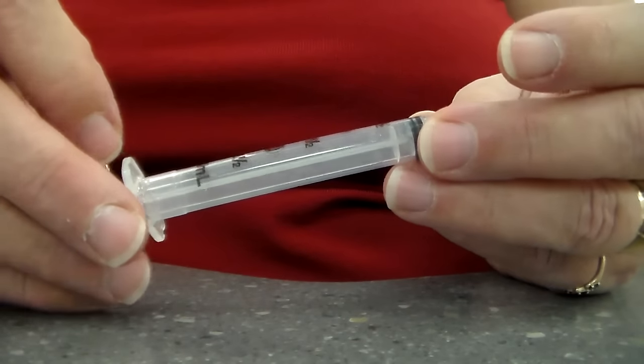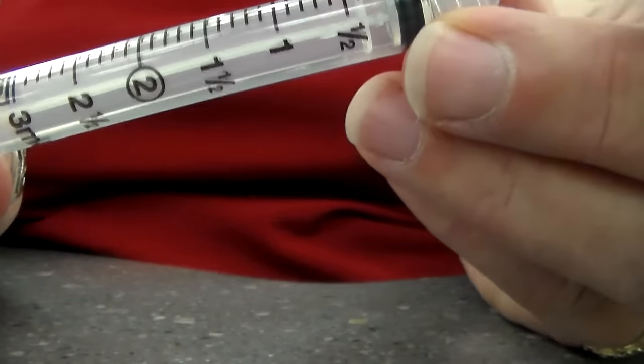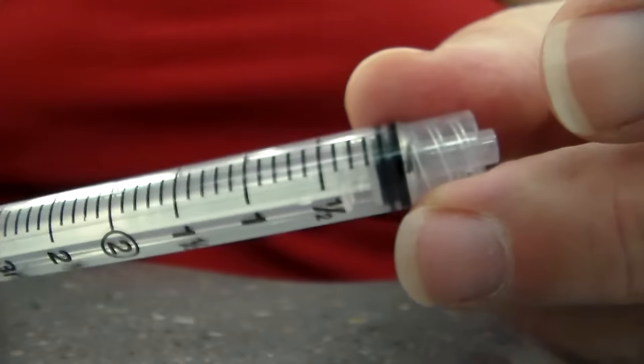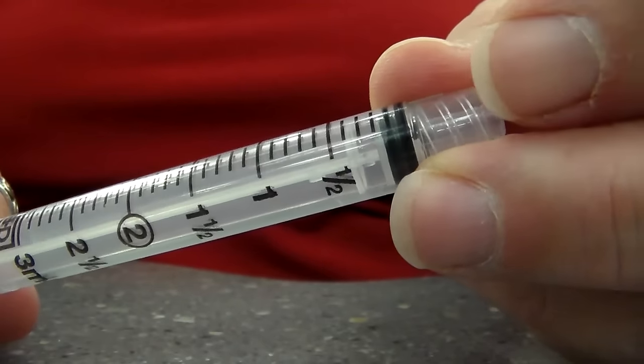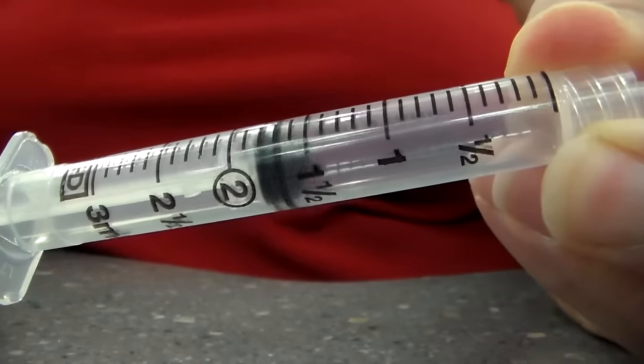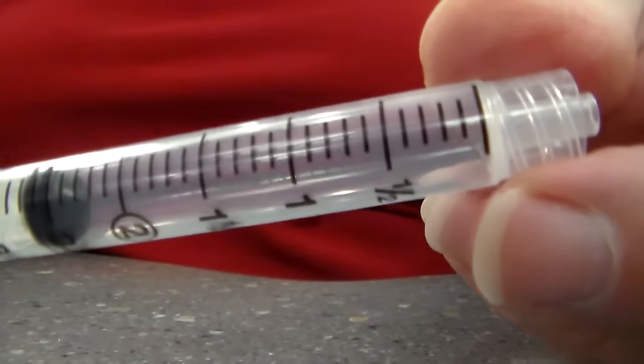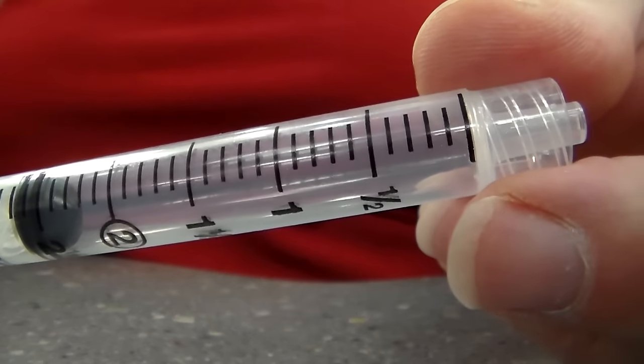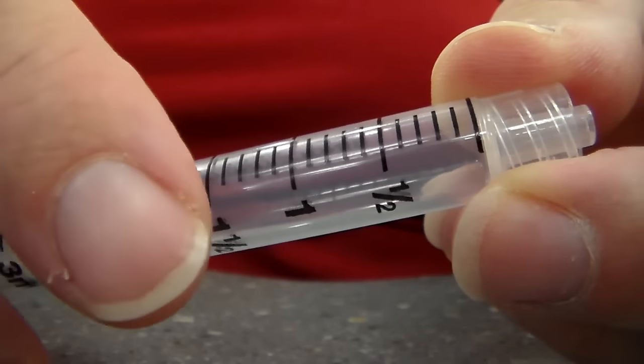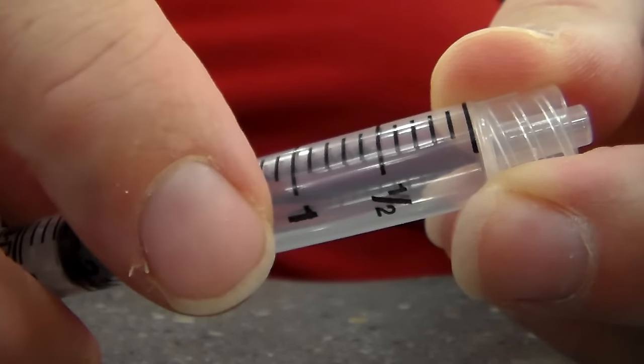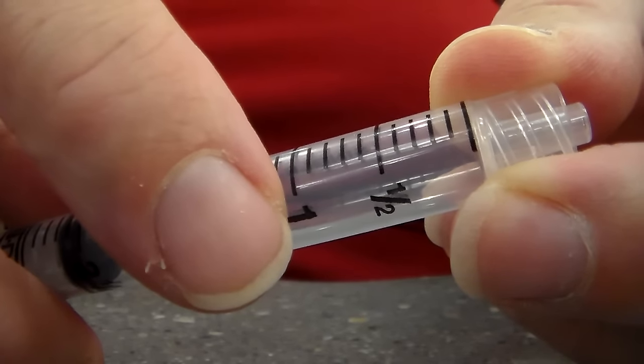They are marked with a graduated measuring system on it. Some of them, each line in between is two, and some of them each line is one, so you'll have to know what it is.